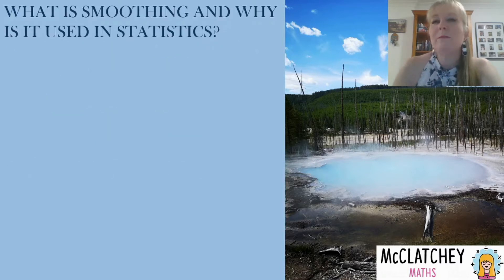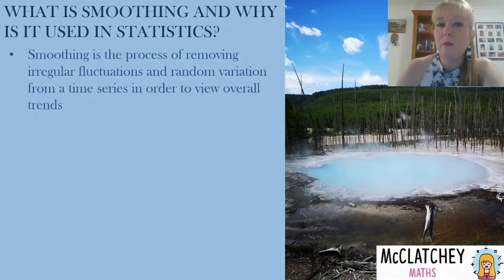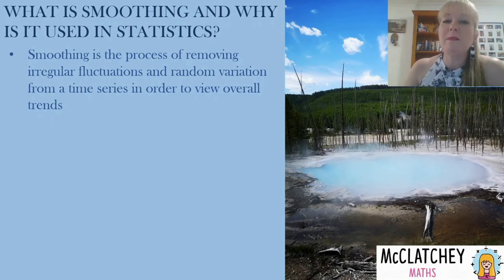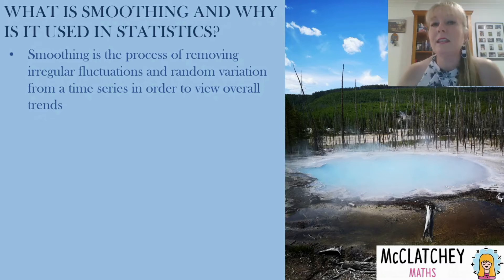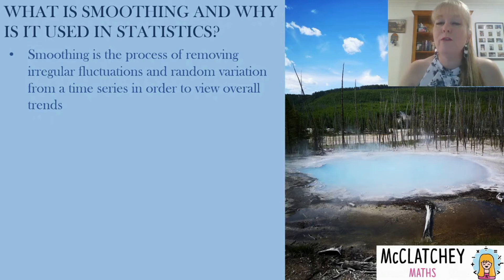So firstly, let's talk about what smoothing is and why we use this in statistics at all. Why not just use the raw data? Well, smoothing is a process where we remove irregular fluctuations — that's when data goes up and down — and that random variation from a time series, so that we can look at overall trends. Because if all you can see is spikes up and down all over the place, it's very hard to see if there's a trend of increase or a trend of decrease. Smoothing helps to eliminate some of that randomness so we can see what's going on overall.